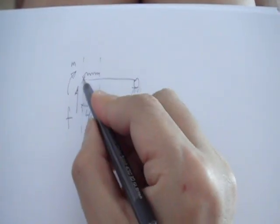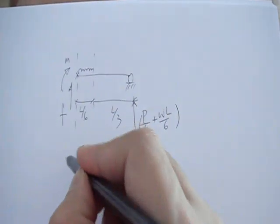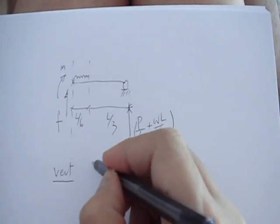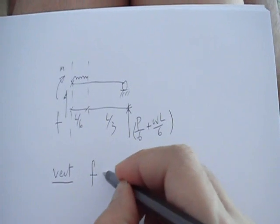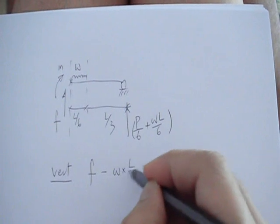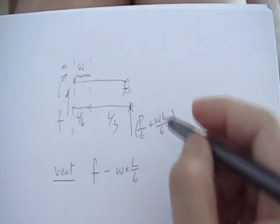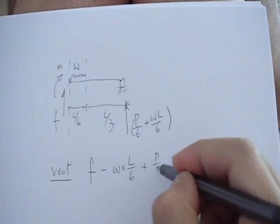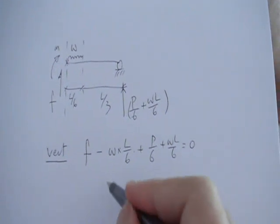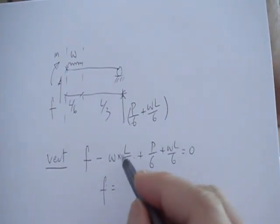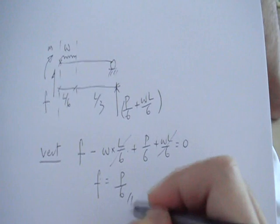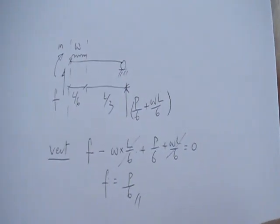You try to find out the bending moment there, and the shear force there is very easy. You set up your vertical equilibrium. So F minus that's little w, w times L over 6, that's minus, and that's plus P over 6 plus wL over 6, and they add up to 0. So F is simply w over 6 minus w over 6, so it's just P over 6.